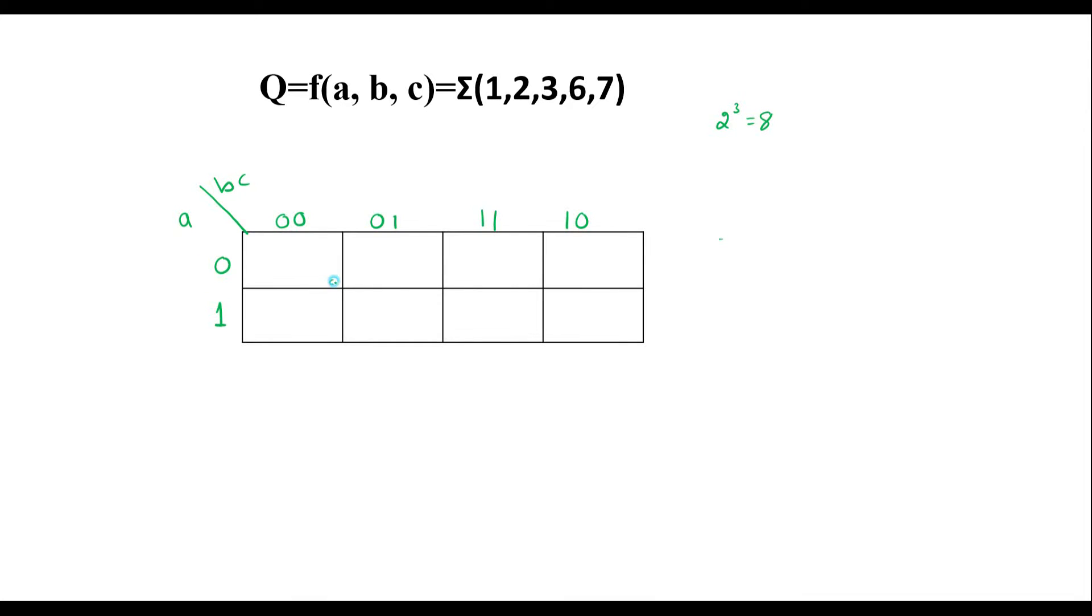Let me write the cell numbers. This is 0, 1, 2, 3, 4, 5. Here it will be 6, 1, 1, 0 and it is 7.